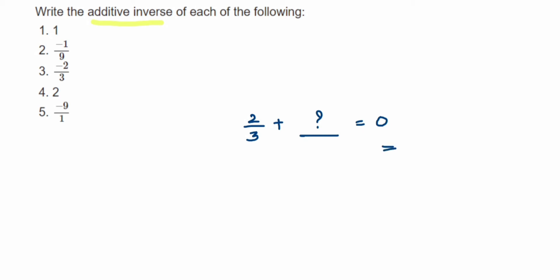And whatever answer comes here, this will become additive inverse. So you can see that 2 by 3, if I add minus 2 by 3, the positive and negatives will get cancelled and we'll get 0. So minus 2 by 3 will become additive inverse of 2 by 3.